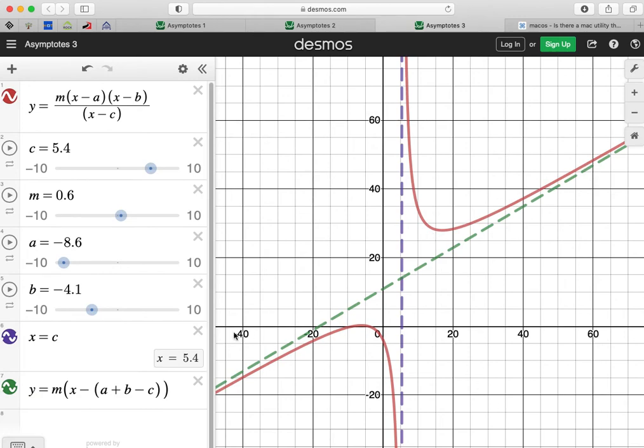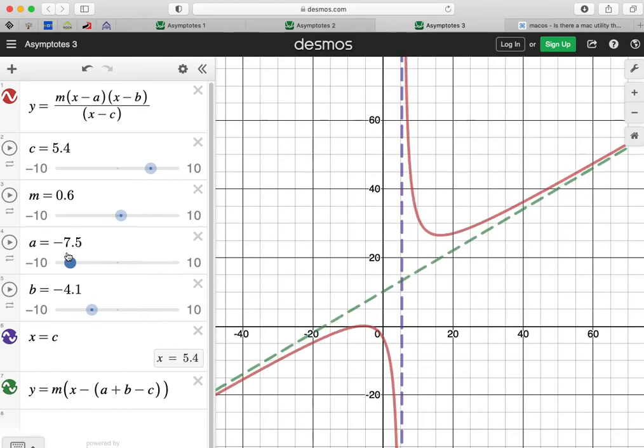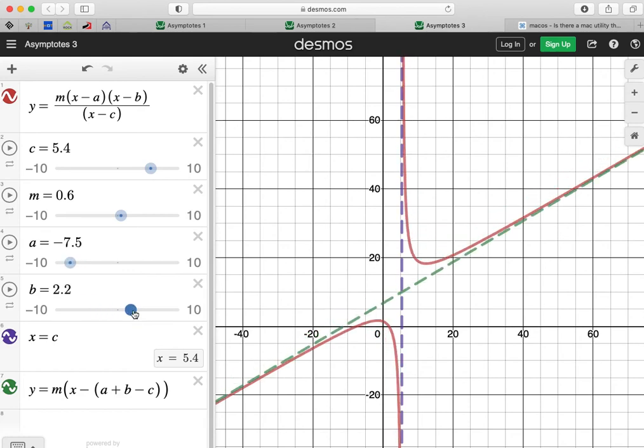What affects the slope of the asymptote? Well, if we can move things around, you'll notice that a, one of the numbers on the top, tends to change the y-intercept. That's interesting. What about b? Well, b does the same. It changes the y-intercept. That's not affecting the slope.